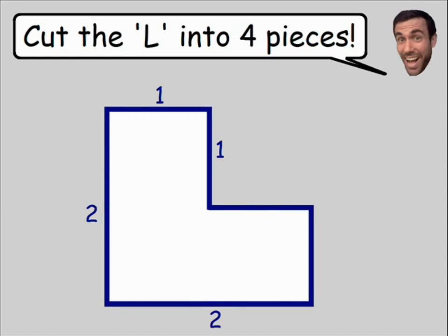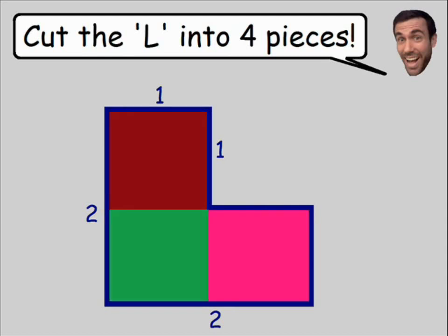There's many different ways we can solve this problem, but the solution that I like the best can be found by first dividing this shape into three identical squares just like we did before. Now what we're going to do is divide each one of these colored squares into quarters.